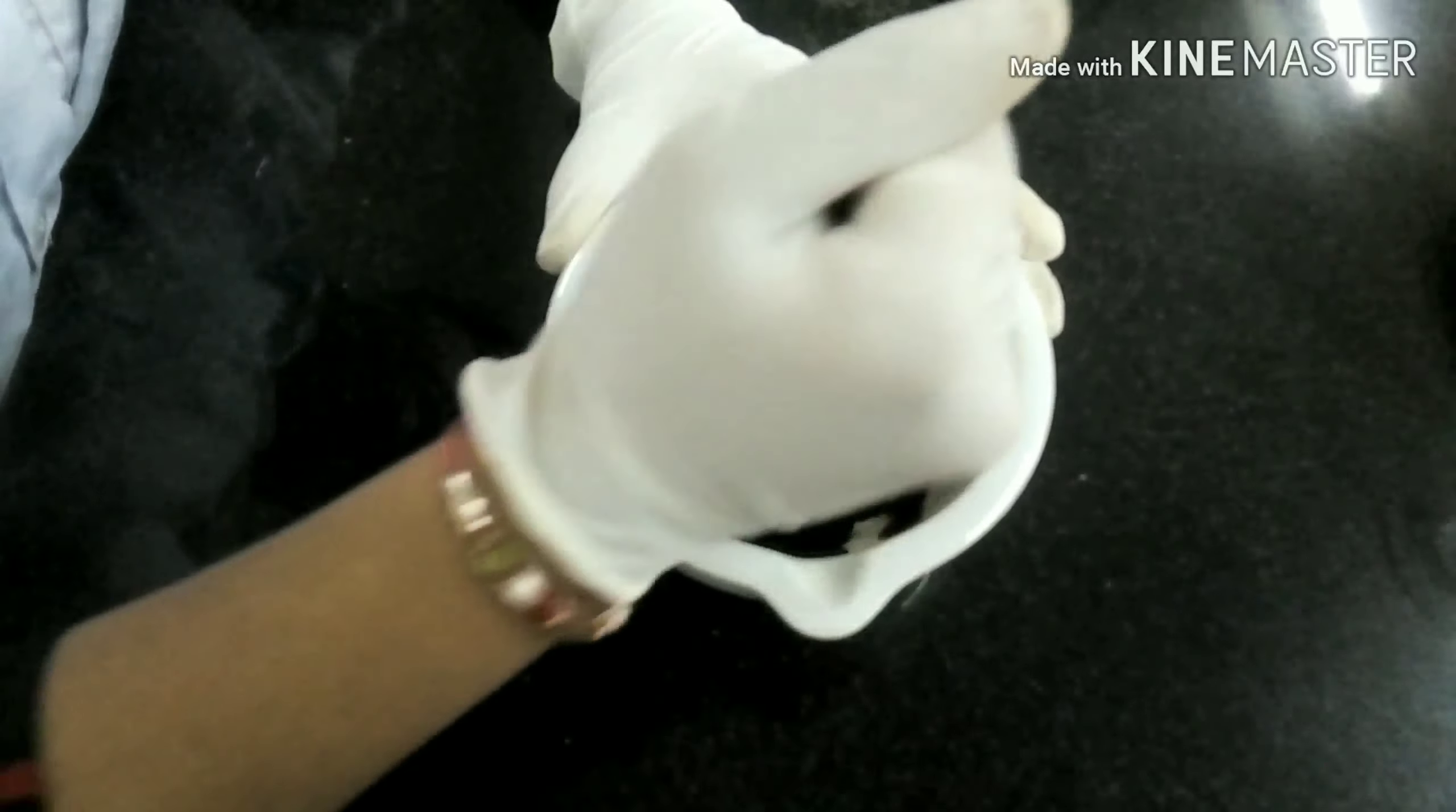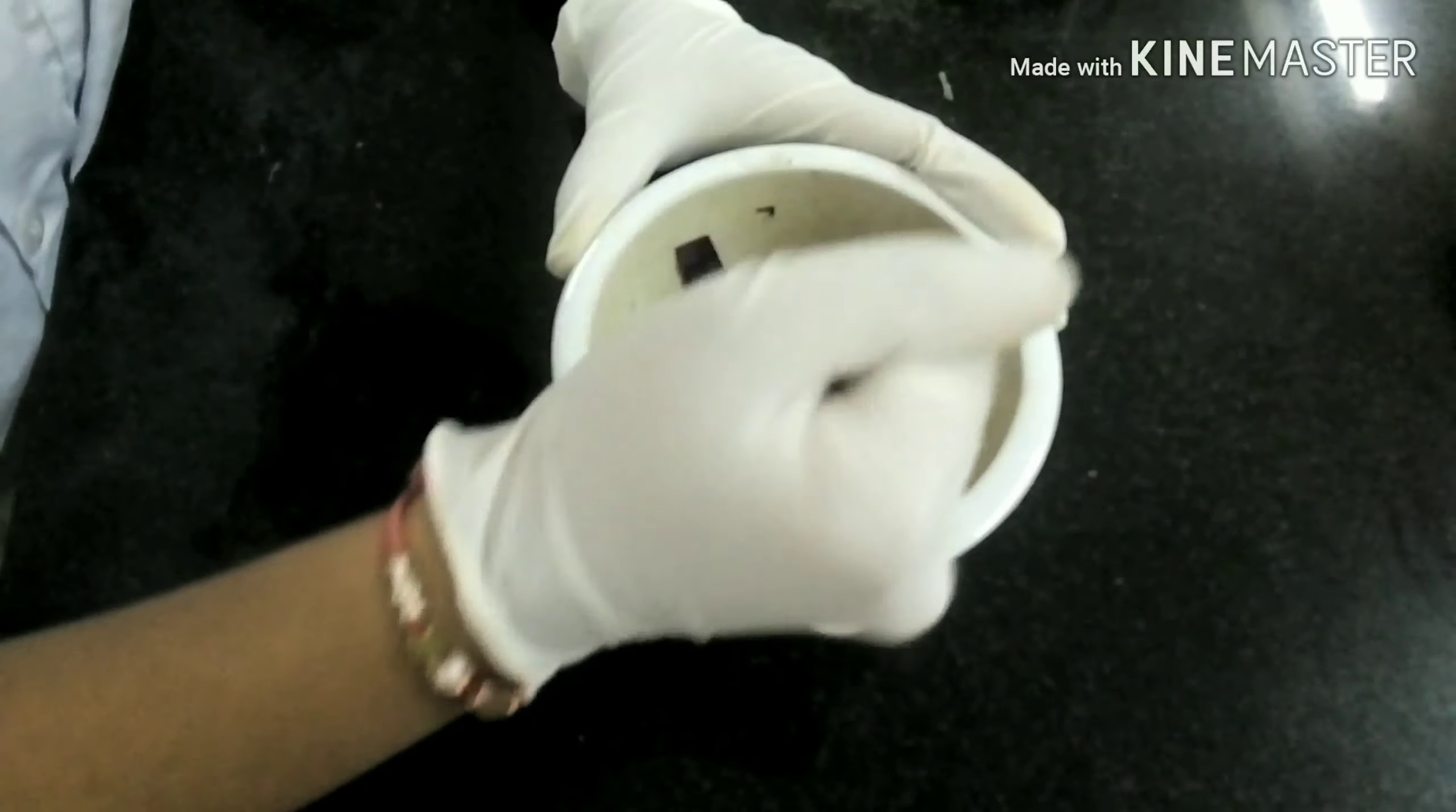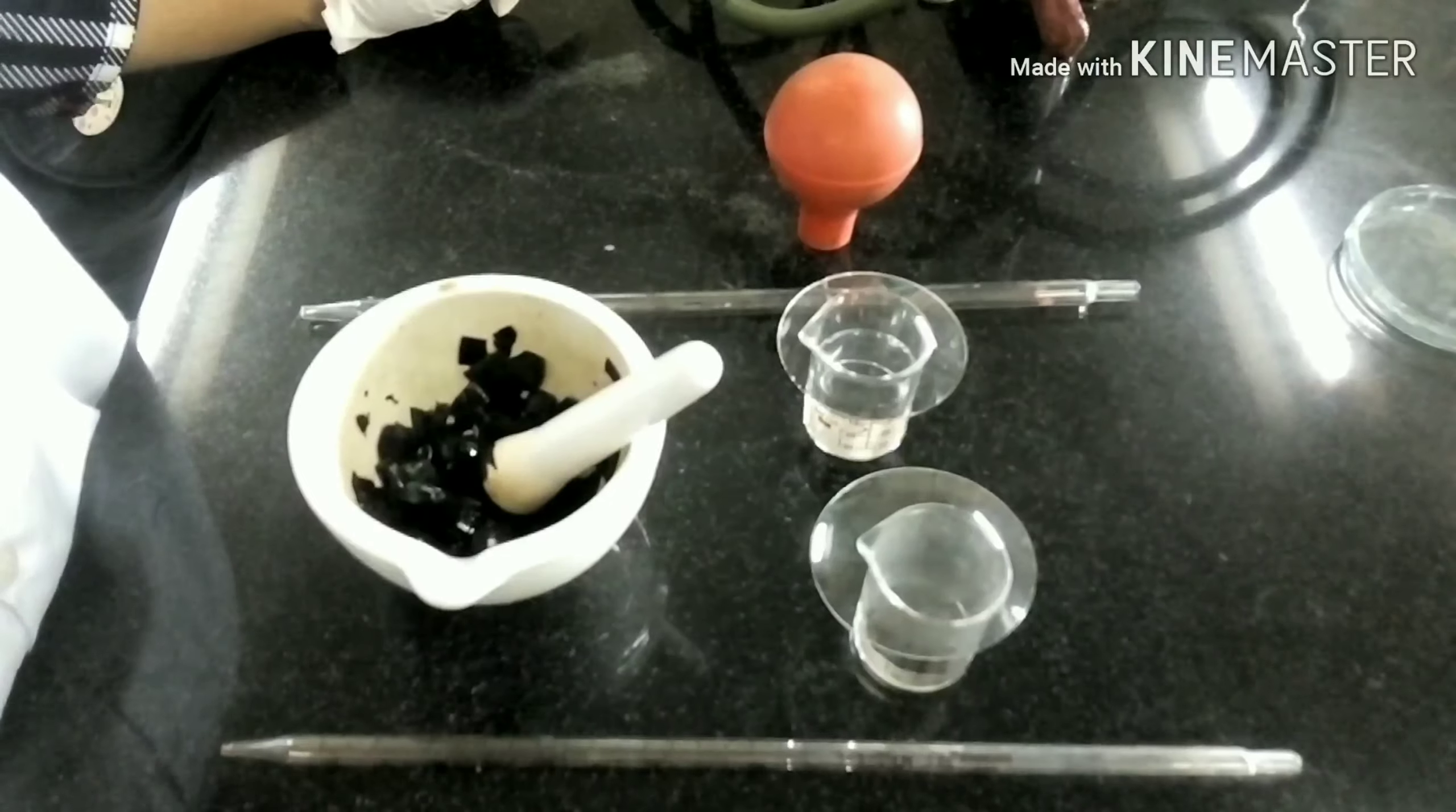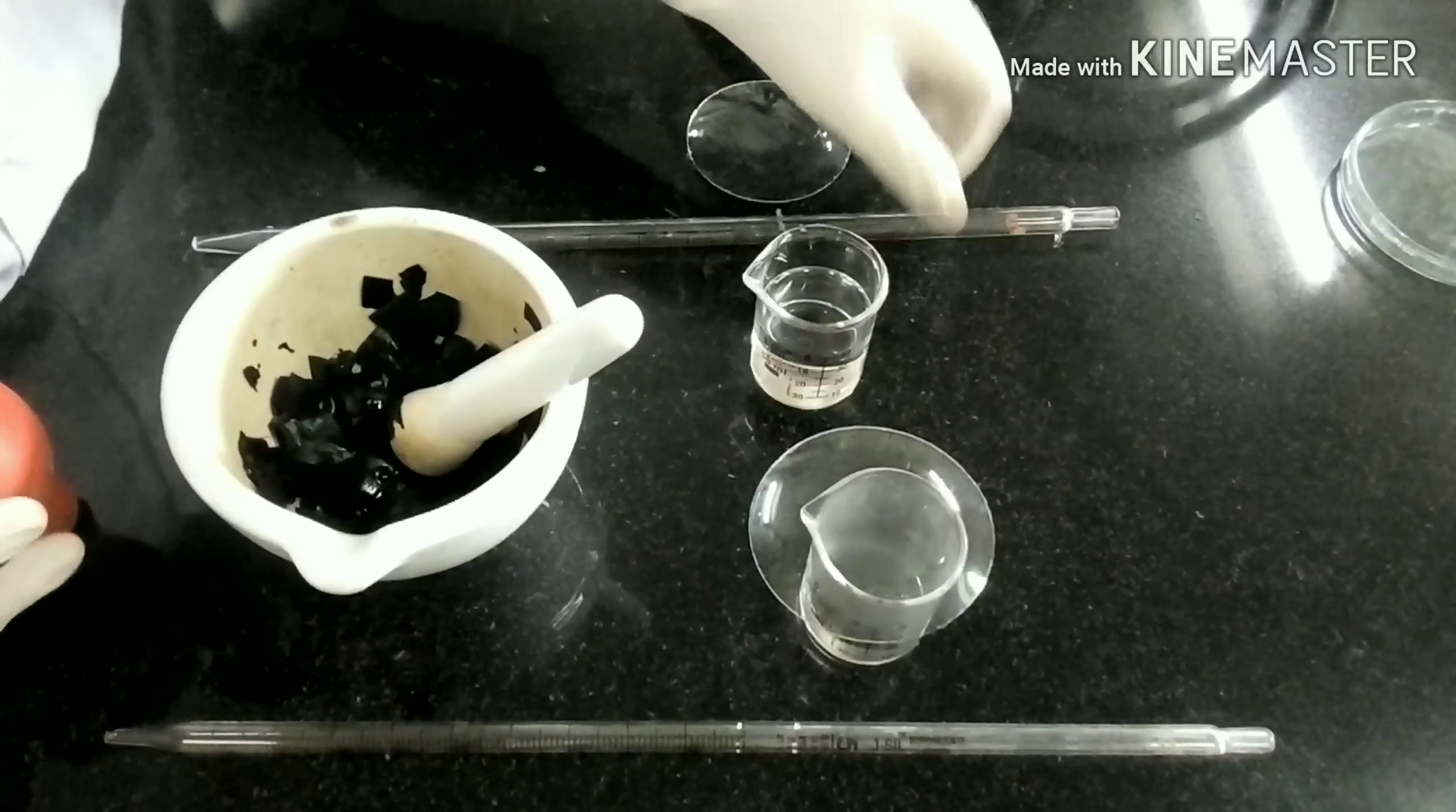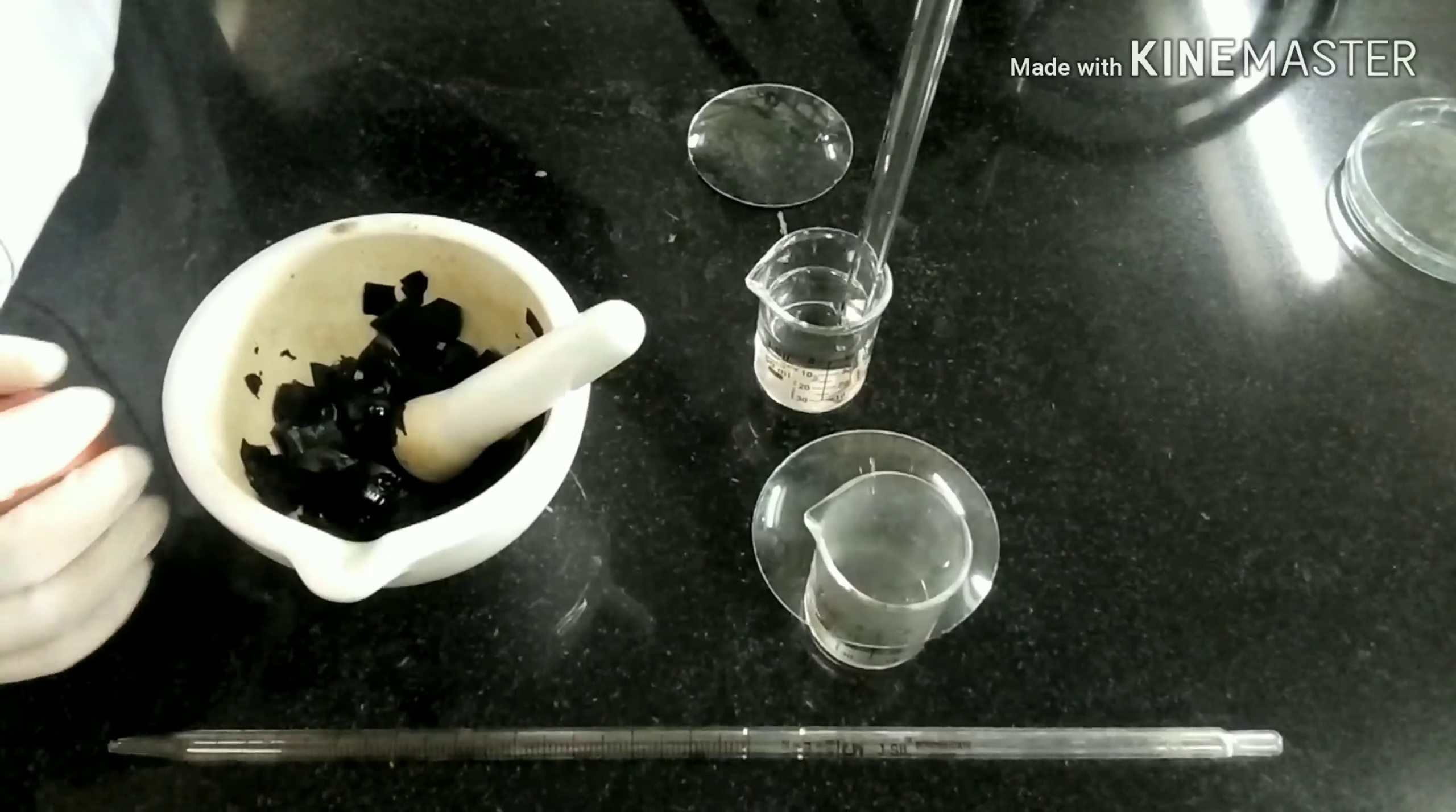Take a few freshly plucked leaves of Tradescantia. Cut the leaves using scissors and put them into mortar. Take test tube containing 3 ml of IPA and pour it into mortar.